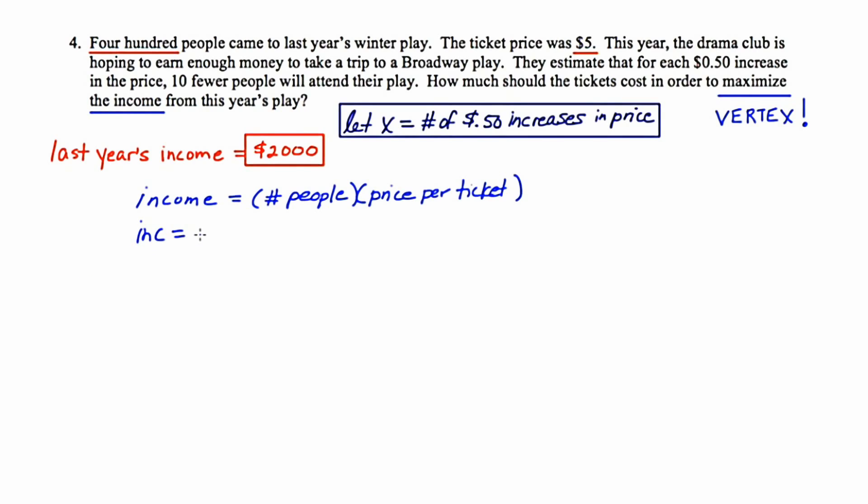Income is the number of people coming. Our home-based number of people is 400. However, for every one of these x's, for every one of these 50 cent increases in price, we're going to lose 10 people. So I'm going to say 400 minus 10x. Our home-based price per ticket was $5, and for every x this is going to go up by 50 cents. The first number in each parentheses represents what I call the home base. We're losing 10 people per 50 cent increase, and we're gaining 50 cents for each one of these increases. So here is our quadratic function.